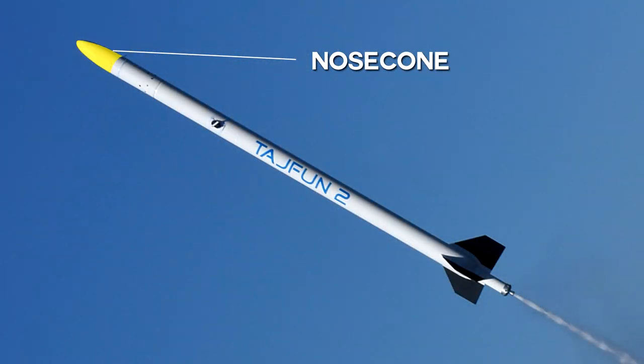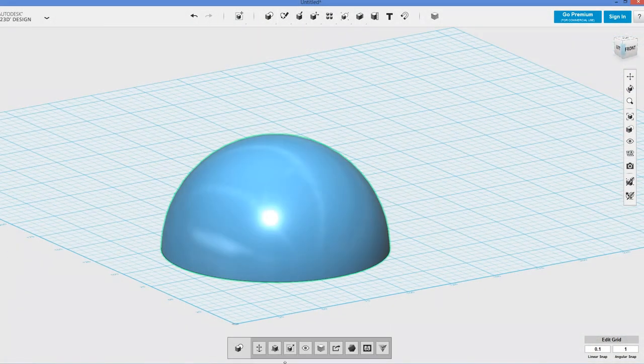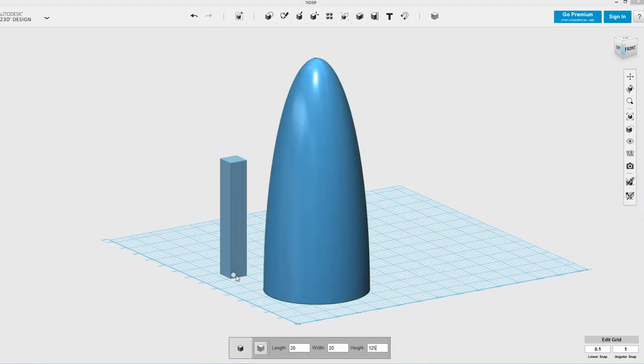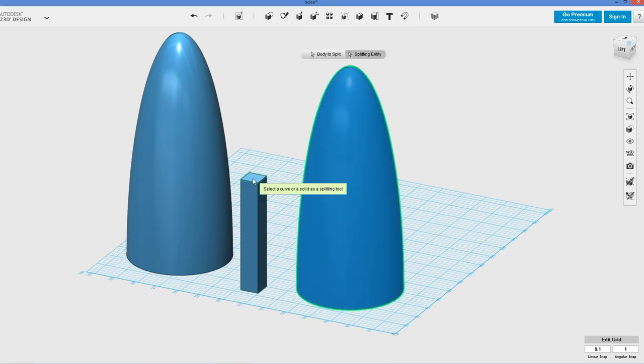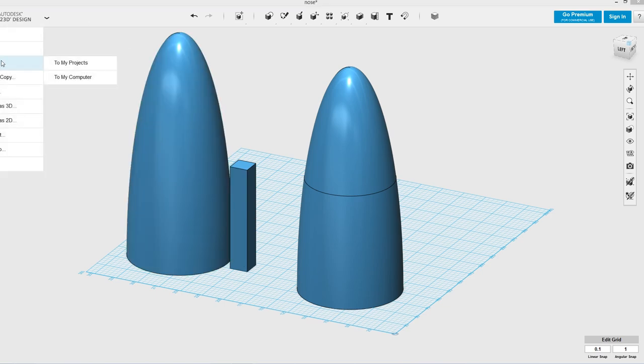Right, time to work on the nose cone. We first model it in CAD. Because this rocket's not going to be going supersonic, an elliptical nose is all that we really need. Unfortunately our 3D printer's build space isn't tall enough, so we need to make it in two sections.